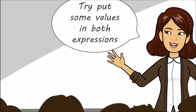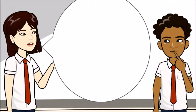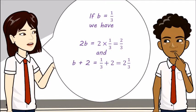Try to put some values in both expressions. If b is equal to a third, we have 2b equals 2 times a third which is 2 over 3. And b plus 2 is a third plus 2 which equals 2 and a third. 2 and a third is bigger than 2 thirds, so b plus 2 is bigger.